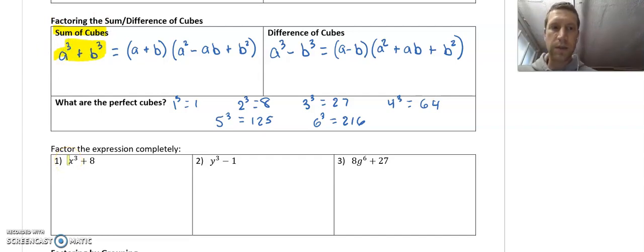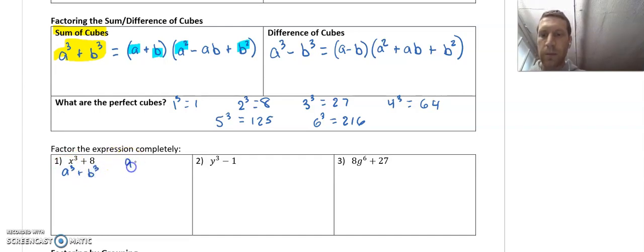This is what I have: I have a cubed plus b cubed. In this instance, a cubed is x cubed, b cubed is 8. And we can see on the right side of this formula, I have a, b, a squared, b squared. So in order to figure all that stuff out, I need to know what a and b are. I have a cubed plus b cubed, let's find what a and b are.